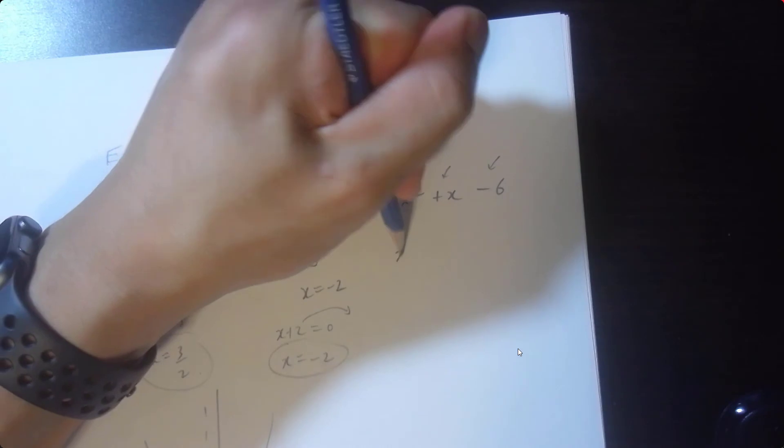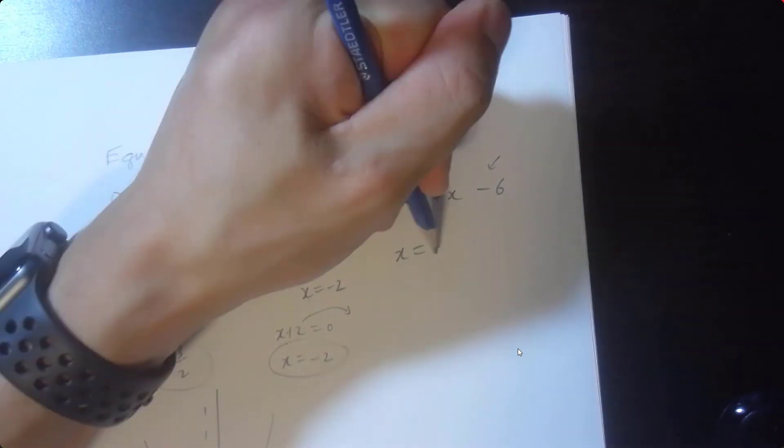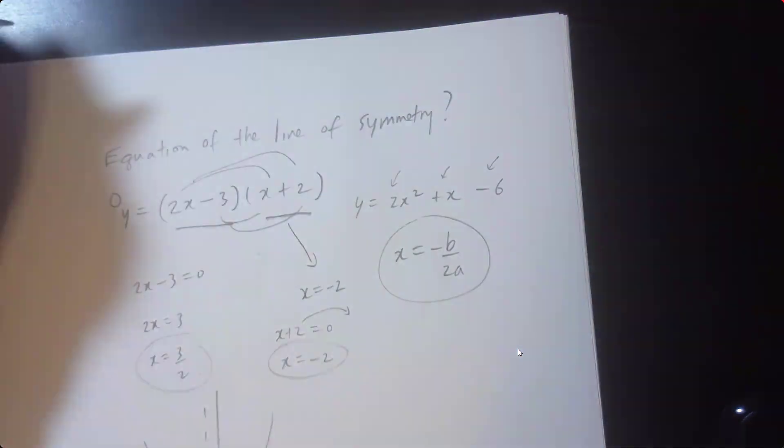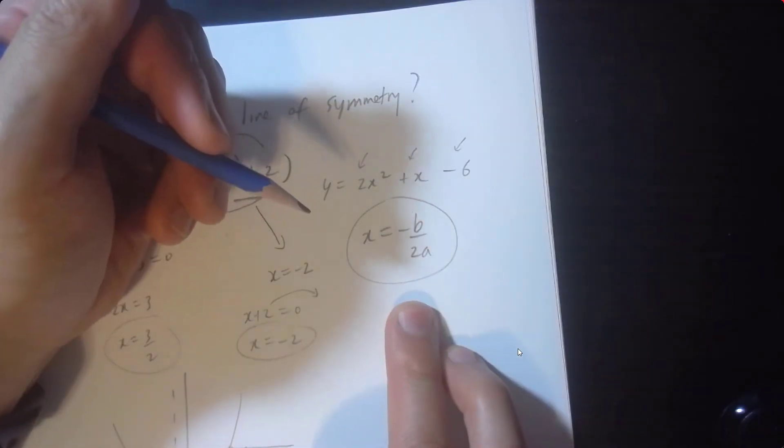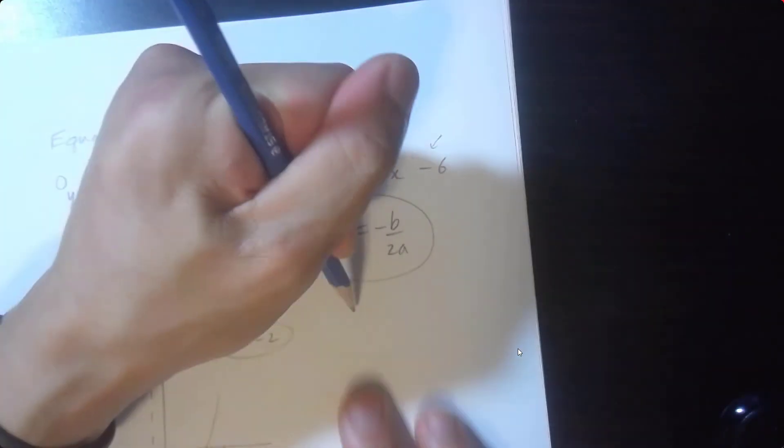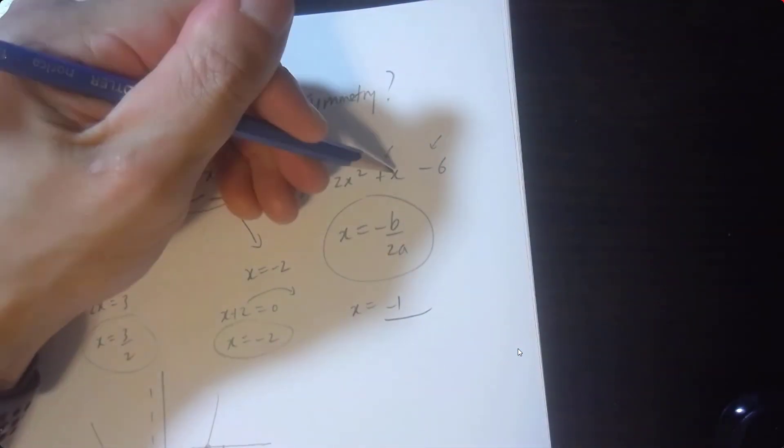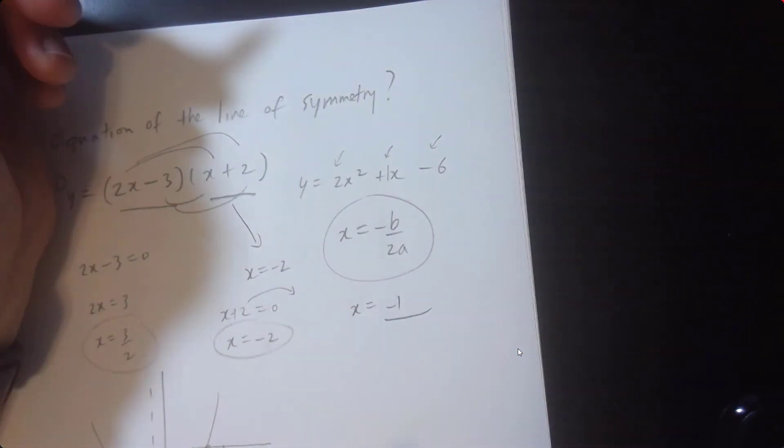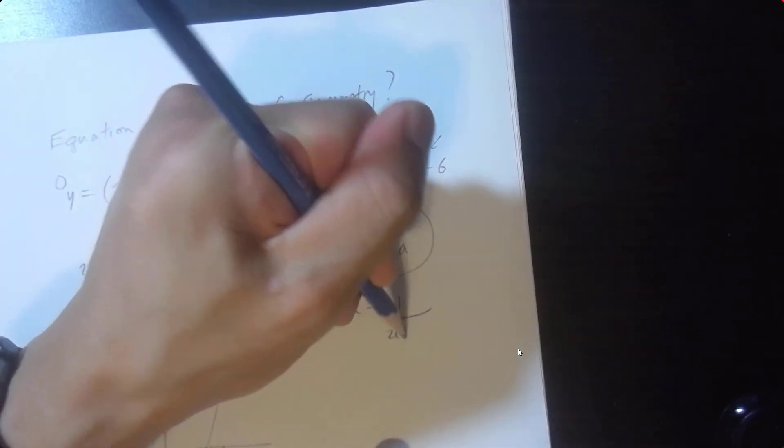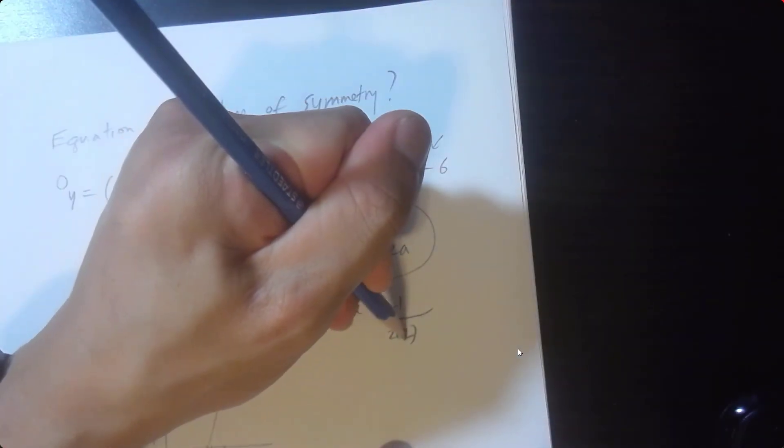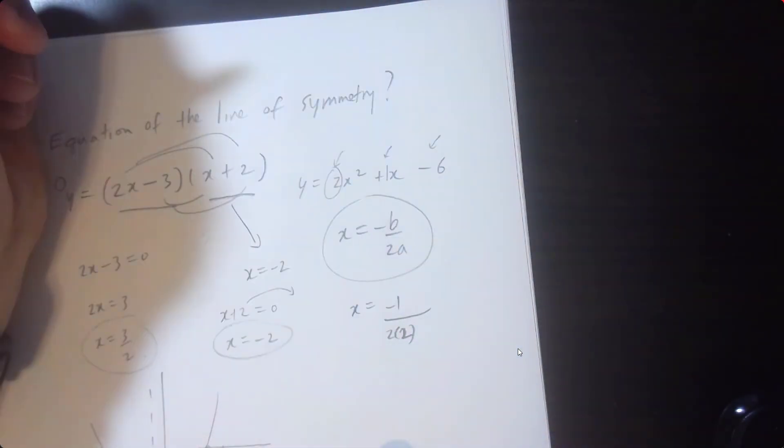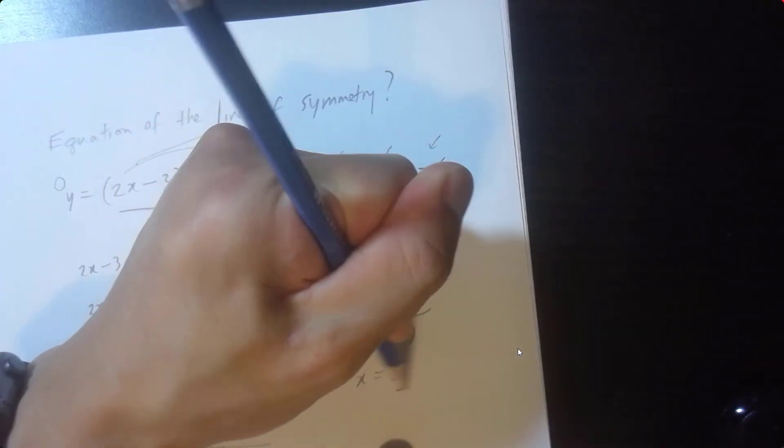So the vertex formula—the x value of the vertex is negative b over 2a, please memorize that. So this is also exactly the equation of the line of symmetry: x equals negative b, which is negative 1 (there's a hidden number 1 here), over 2 times a. 2 times the a value, which happens to be 2. Therefore, x equals negative 1 fourth.